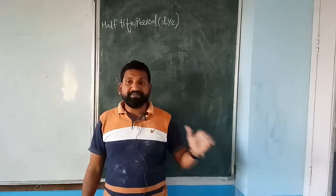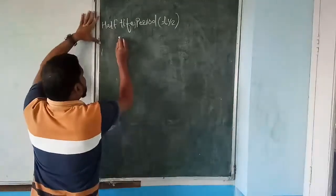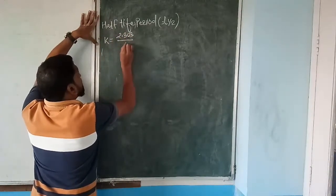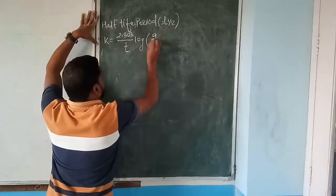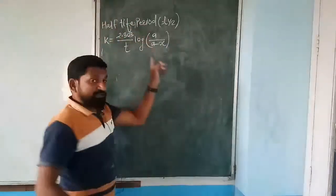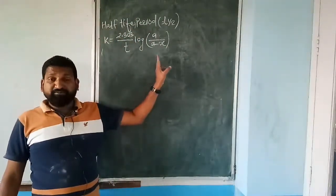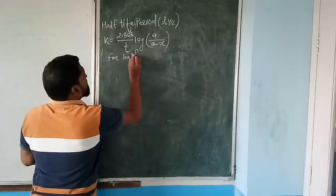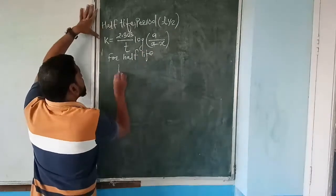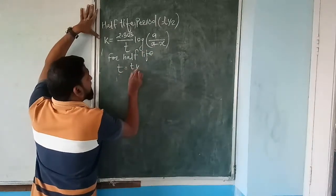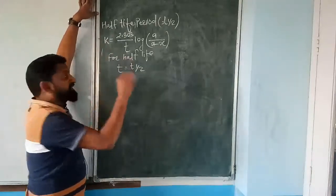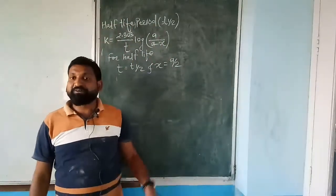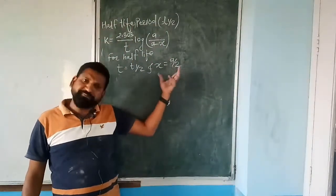The half-life period is denoted by T½. Definition: the amount of time required to decompose 100% initial concentration of the reactant to its half value (50% consumption). For half-life conditions: T = T½ and x = a/2.